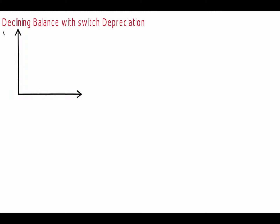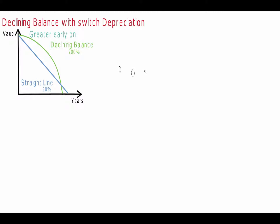Declining balance with switch. Declining balance depreciation is an accelerated method where depreciation is calculated using the declining balance and the straight line method. The system compares the two values and uses the greater of the two as the depreciation value for the asset. The depreciation rate for the declining balance method can be as high as 200%. Declining balance ensures that the depreciation of an asset is greater earlier on in the asset's life. This is useful for assets that lose value quickly, such as cars.